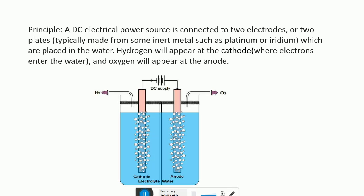This figure shows a complete electrolysis of water setup. It consists of a plastic container, two graphite electrodes — cathode connected to the negative terminal and anode connected to the positive terminal of the DC supply — and water as the electrolyte. Since water is a poor conductor of electricity, we add some ionic compound such as salt, H₂SO₄, or KOH to increase its conductivity. We also note that in molecular weights, hydrogen is double that of oxygen.